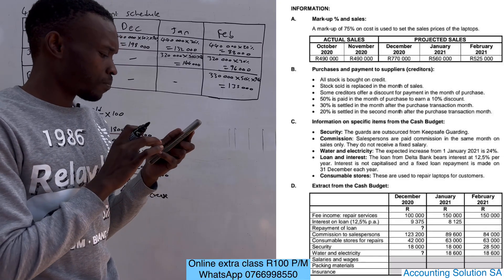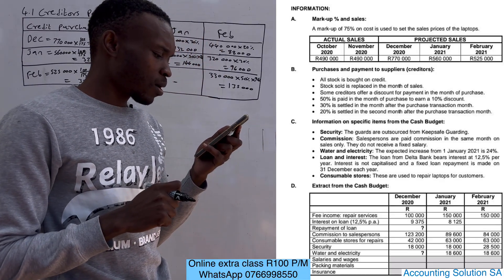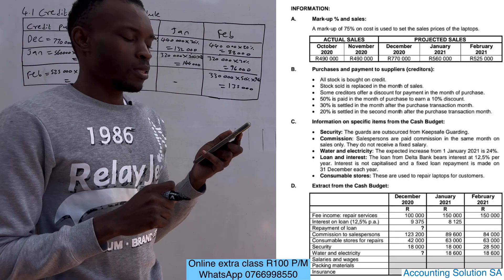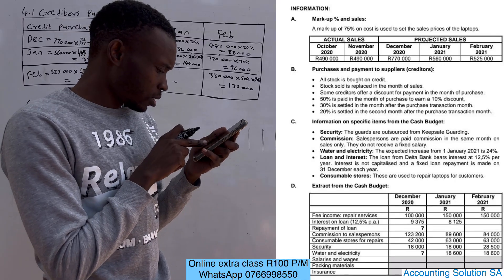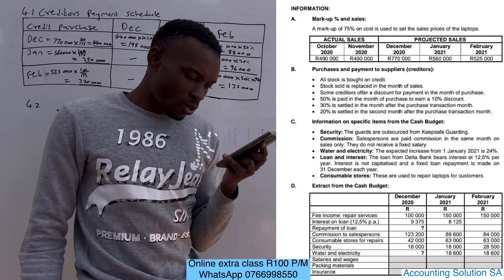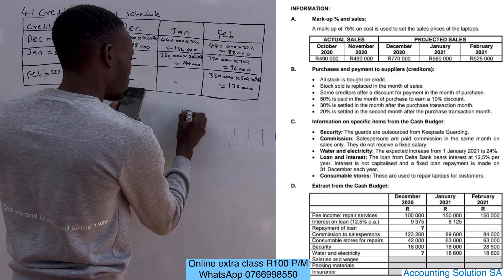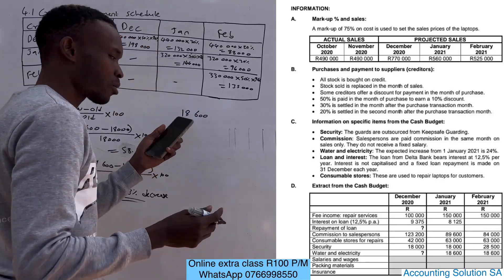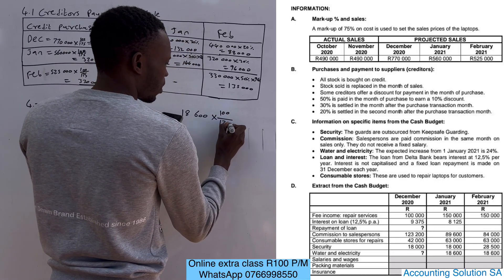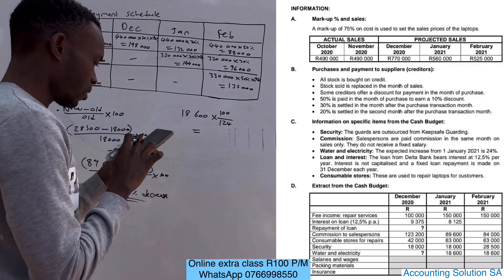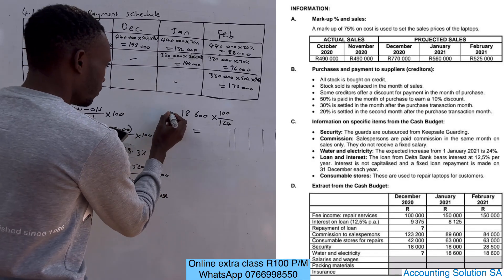For water and electricity budgeted for December: there is an expected increase from January 2021 of 24 percent. We don't have the December amount — we are looking for it. January's water and electricity is 18,600. We want to go back: we are looking for 100 percent, and what we have is after an increase of 124 percent (100 plus 24). So we calculate: 18,600 multiplied by 100 over 124, which gives us 15,000.